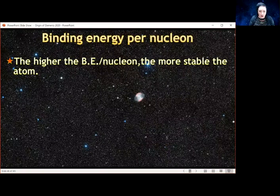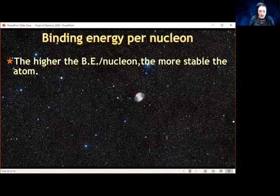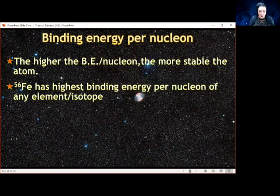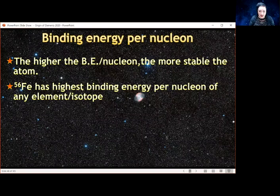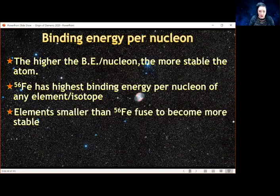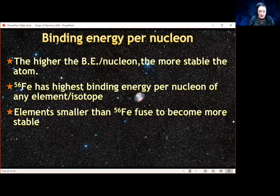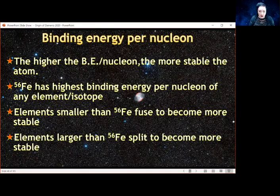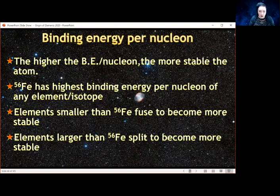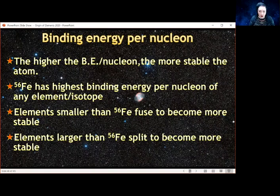The higher the binding energy per nucleon, the more stable the atom. It's going to take more energy to break it apart again. Iron-56, 26 protons and 30 neutrons, has the highest binding energy per nucleon of any element. For elements smaller with less nucleons than iron-56, they can stick together and become more stable. But elements larger than iron-56 are going to split to become more stable. At the low end, you fuse together to get more stability and release energy. At the high end, you split apart to produce energy and become more stable. That's why the radioactive elements do fission, they fall apart to become more stable.